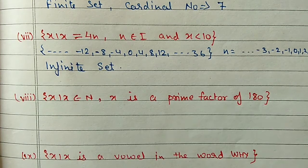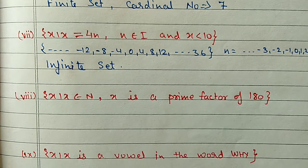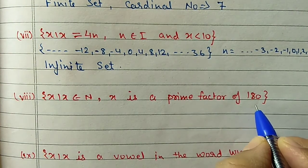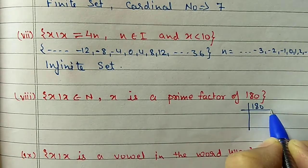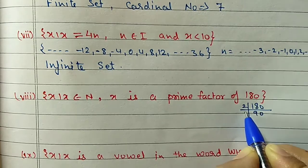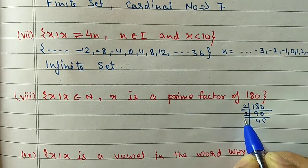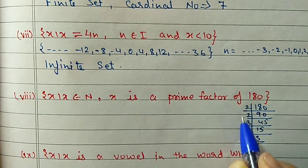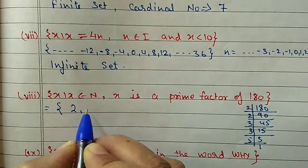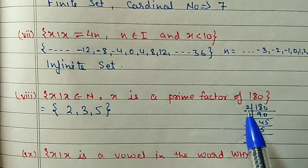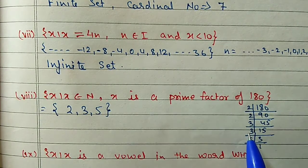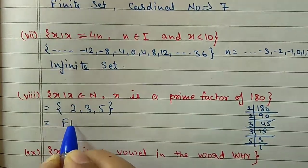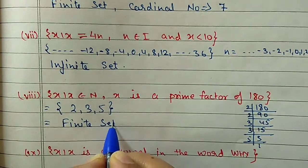Part (viii): {x such that x ∈ ℕ and x is a prime factor of 180}. We do the prime factorization of 180: 2 × 90, 2 × 45, 3 × 15, 3 × 5, 5 × 1. The prime factors are 2, 3, and 5. We do not repeat - 2 appears twice but we write it once, and 3 also appears twice. So this is a finite set and the cardinal number is 3.